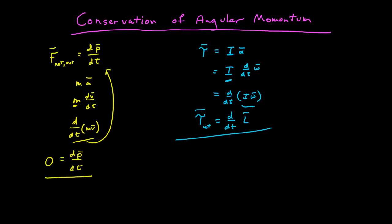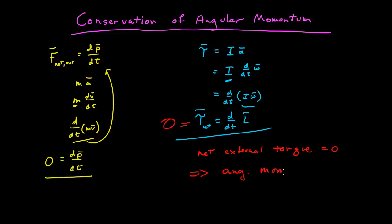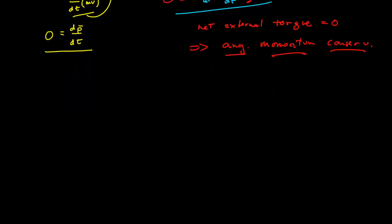And so just like before, if the net torque is zero, then the angular momentum is conserved. So net external torque equals zero implies angular momentum is conserved. This means, of course, you conserve both the magnitude and the direction of the angular momentum. So angular momentum is conserved when there is no net external torque.